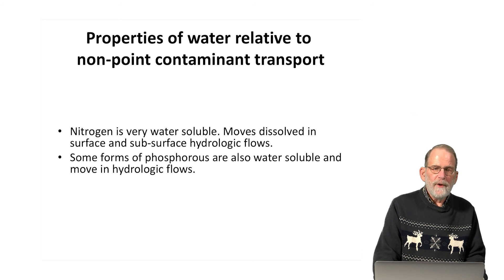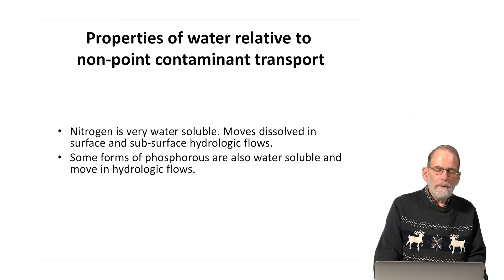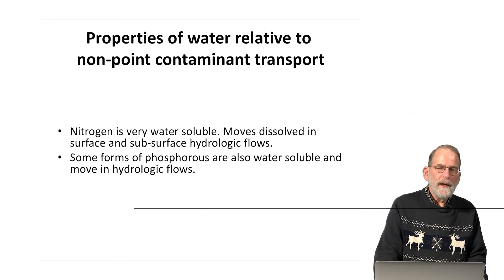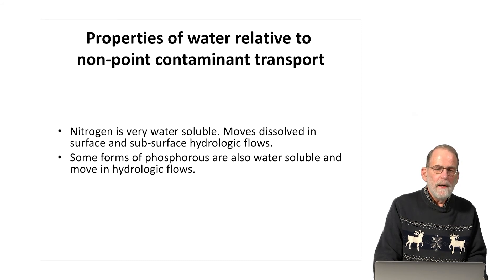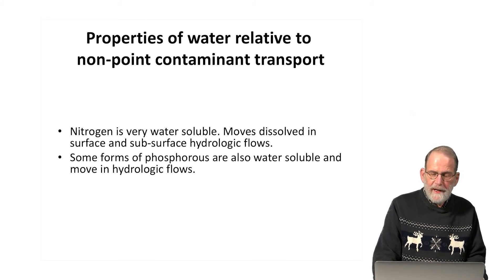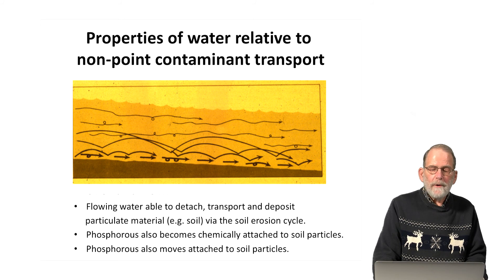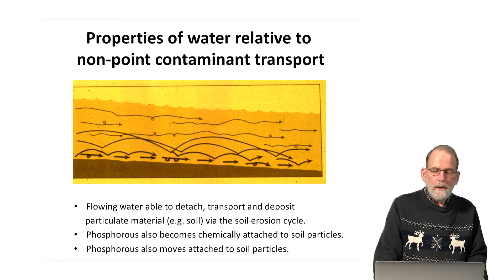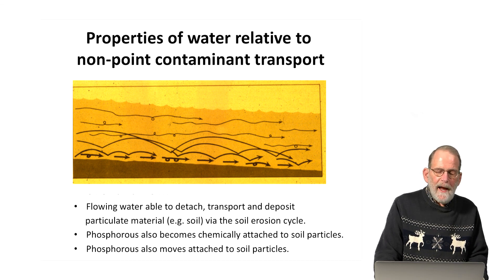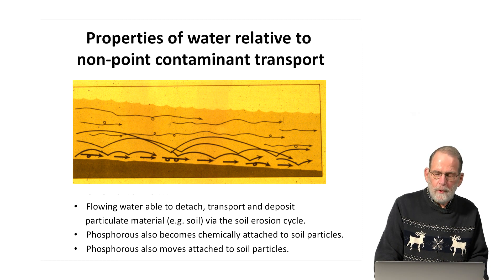Some forms of phosphorus are water-soluble, while other forms fasten themselves to soil particles. So wherever the dissolved phosphorus gets moved by the hydrologic cycle, it's capable of moving from an upland source area to a bottomland sink. Similarly, the soil particles to which the phosphorus material is attached can also move from upland source areas to bottomland sinks. Flowing water is able to detach, transport, and deposit particulate matter via the soil erosion cycle. Phosphorus moves both as a dissolved substance and as a substance attached to soil particles.